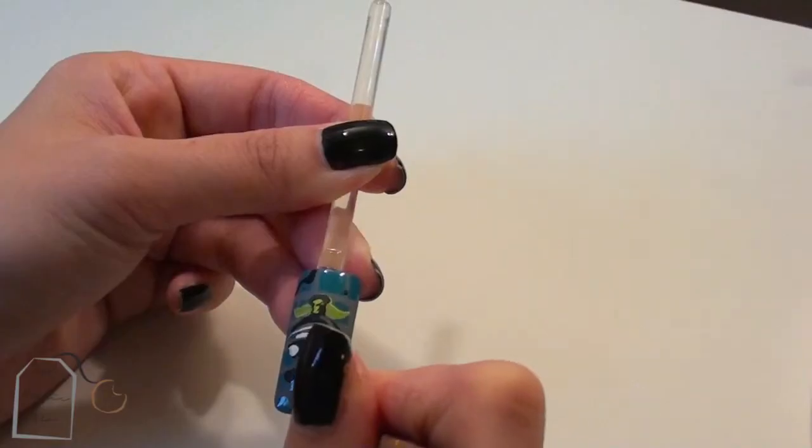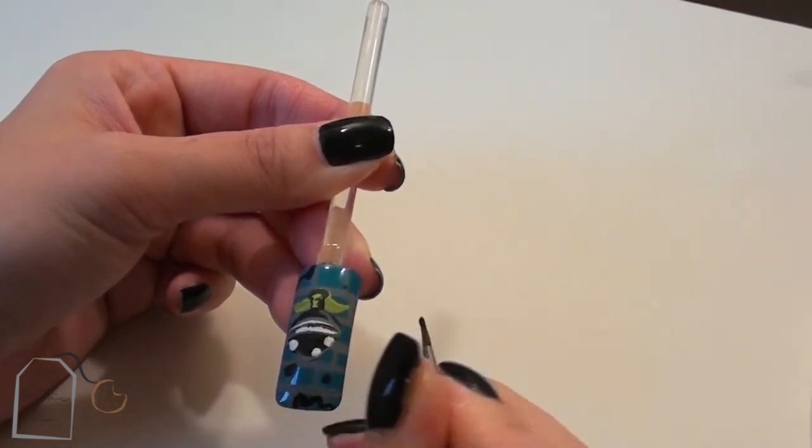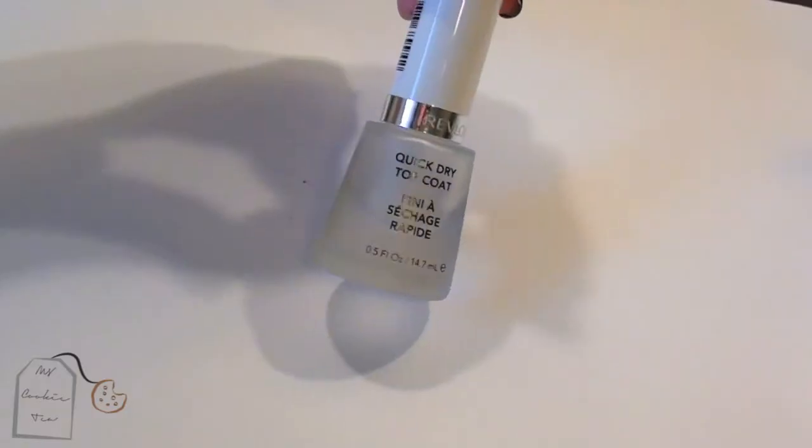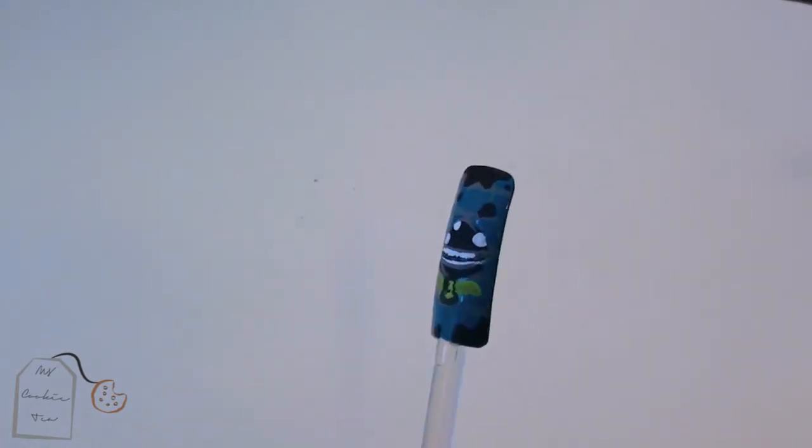Now it's time to add the ink. I started off with the spots and then added the splatters. You can go ahead and add these wherever you see fit. Once you've done that, all you have left to do is add a top coat and the design is finished. I hope you guys enjoyed and I'll see you in the next video.